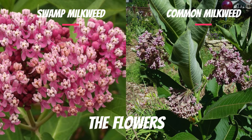Swamp milkweed flowers appear as clusters at the top of the stems. They are usually pink, sometimes white. Common milkweed flowers bloom alongside the stems near the top and as pink clusters.